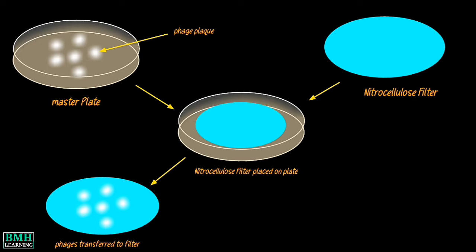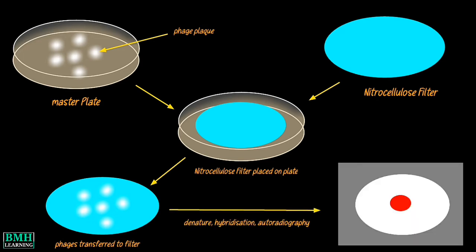Then the filter is incubated in an alkaline solution to disrupt the virions and release the encapsulated DNA, which is subsequently denatured. Next, the probe is added to hybridize with a target DNA fragment, whose position may be displayed by autoradiography.